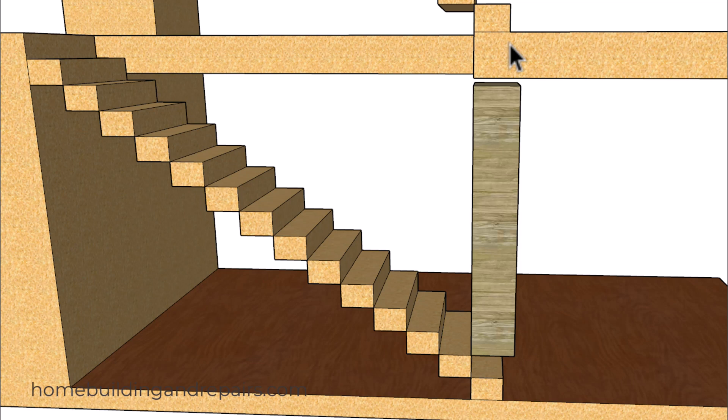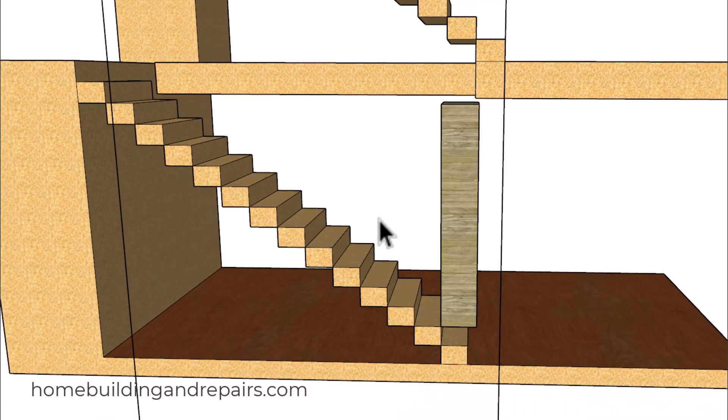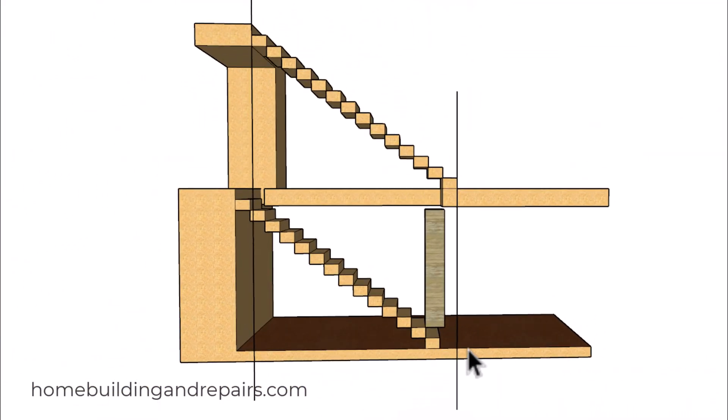So in our example here we have an eight foot ceiling and our floor is twelve and a quarter inches tall. And I went ahead and drew some lines here so that we can see what the original position was on the stairs.